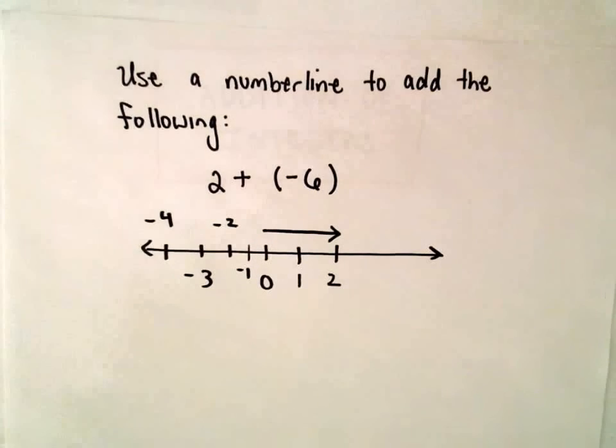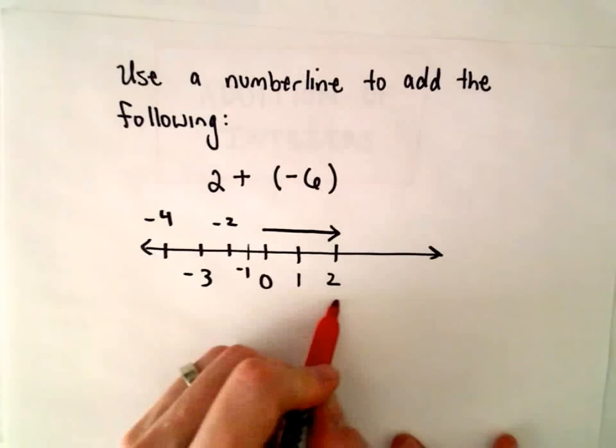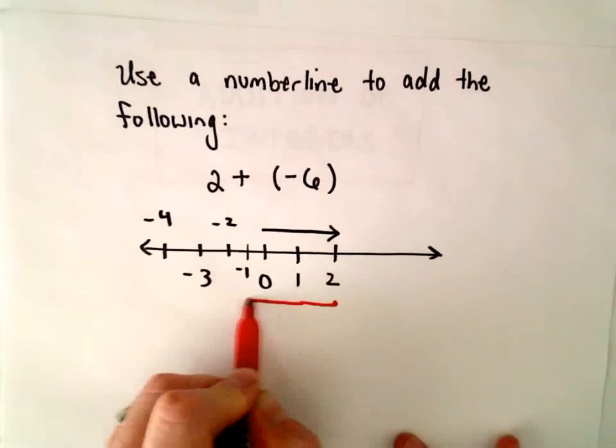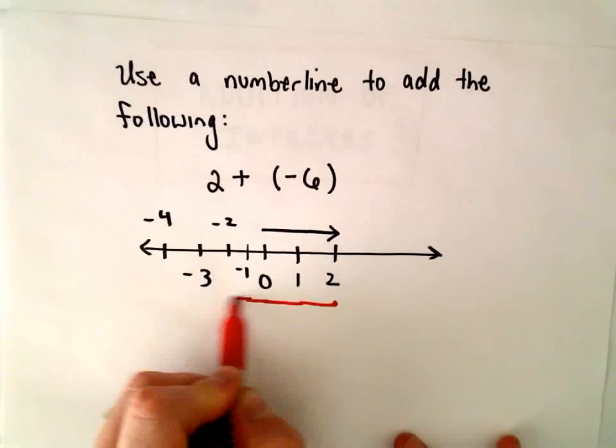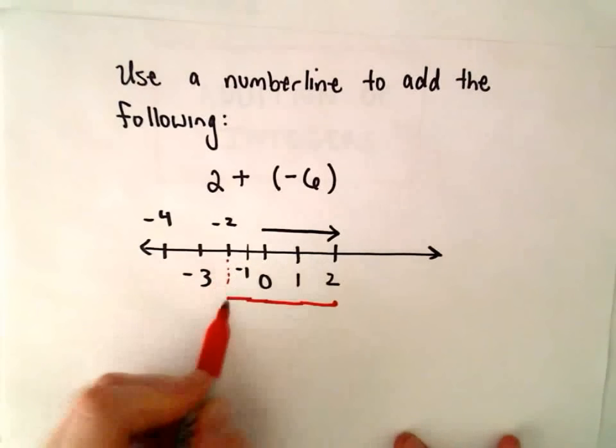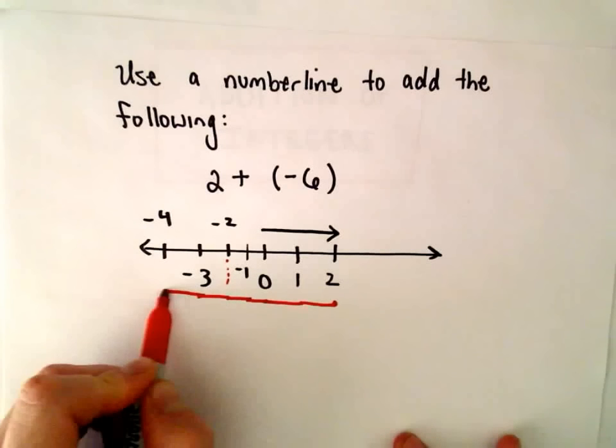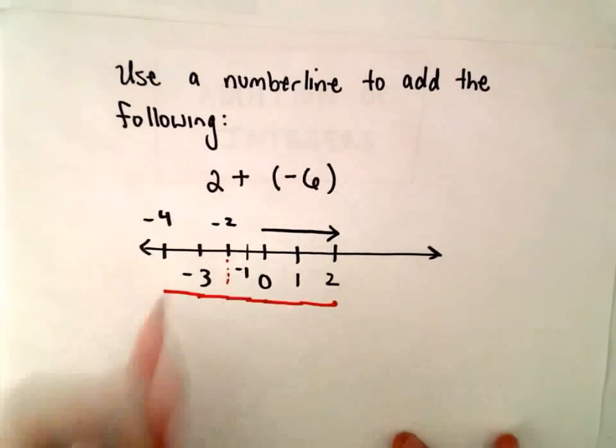Okay, and now we have to go 6 units to the left. So if we start here, there's 1 unit, there's 2 units, there's 3 units under the negative 1, there's 4 units under the negative 2, there's 5 units under the negative 3, and now we've got 6 units to the left.